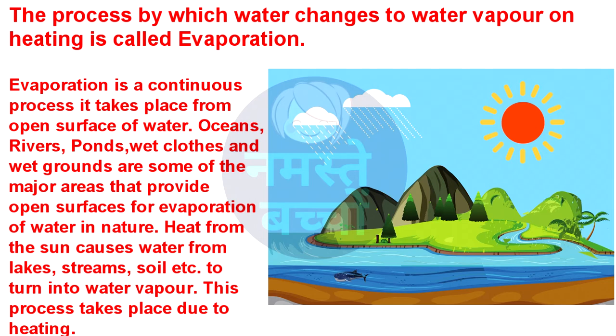Heat from the sun causes water from lakes, streams, soils, etc. to turn into water vapour. This process takes place due to heating.